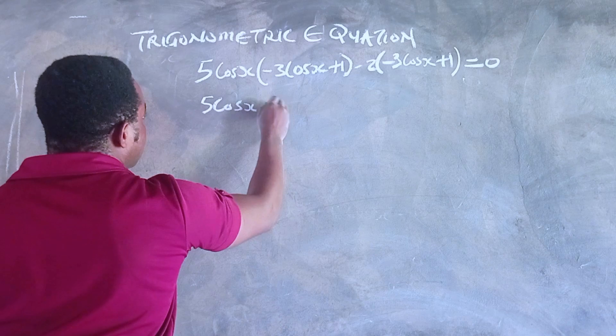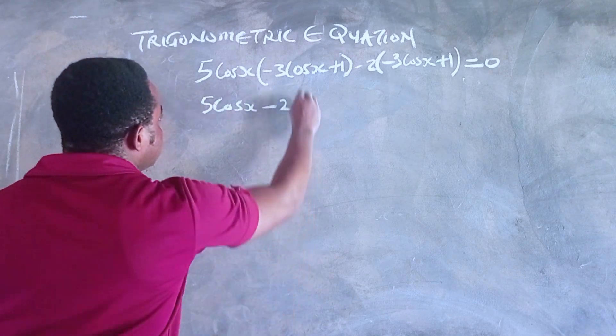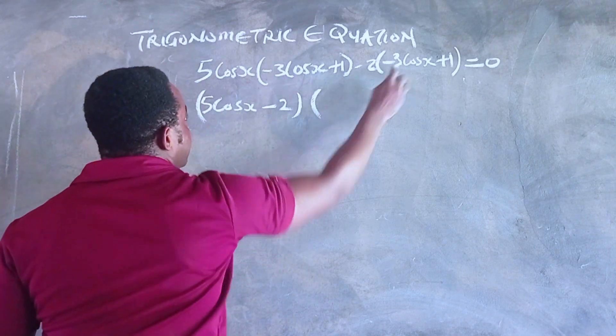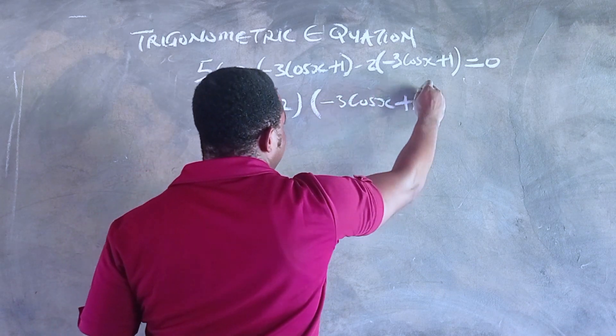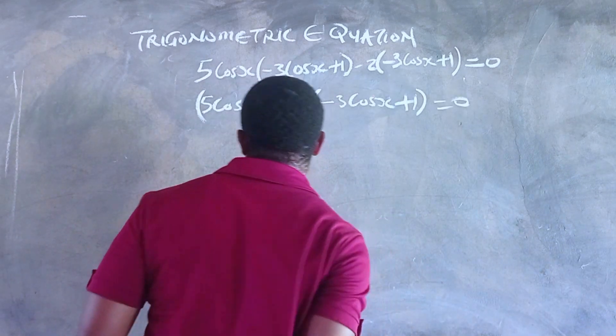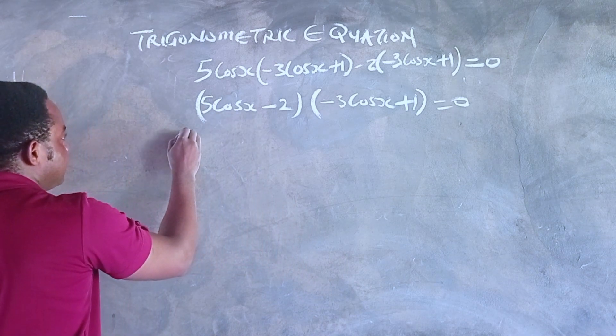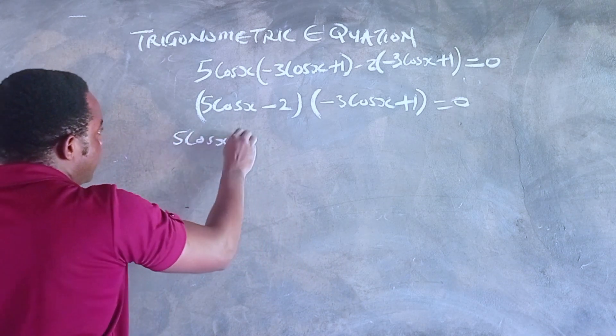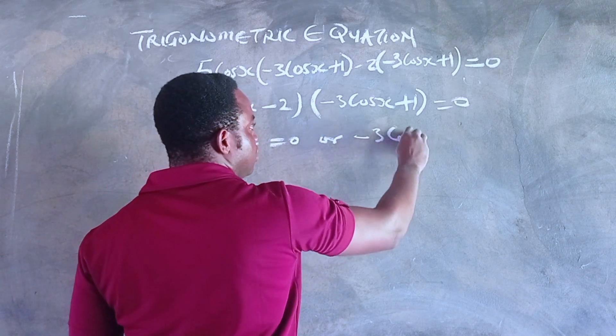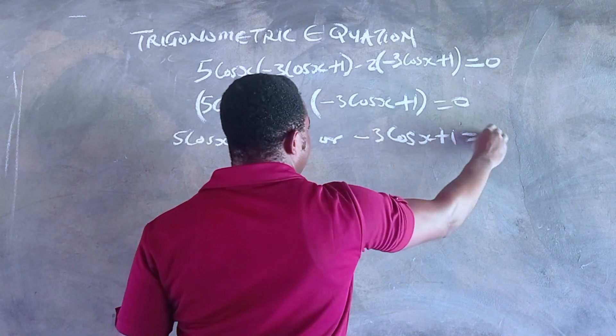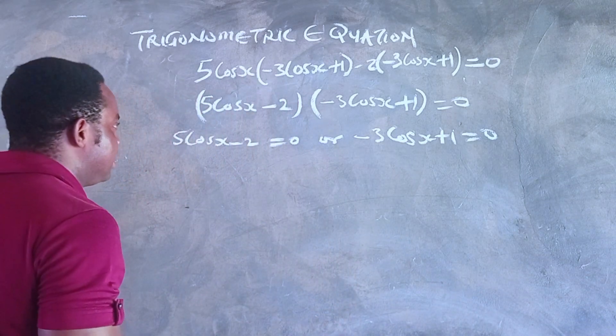Taking the common factor outside, we have (5cosx - 2)(-3cosx + 1) = 0. When we have a product of two factors that equals 0, either both equal 0 or one of them equals 0.